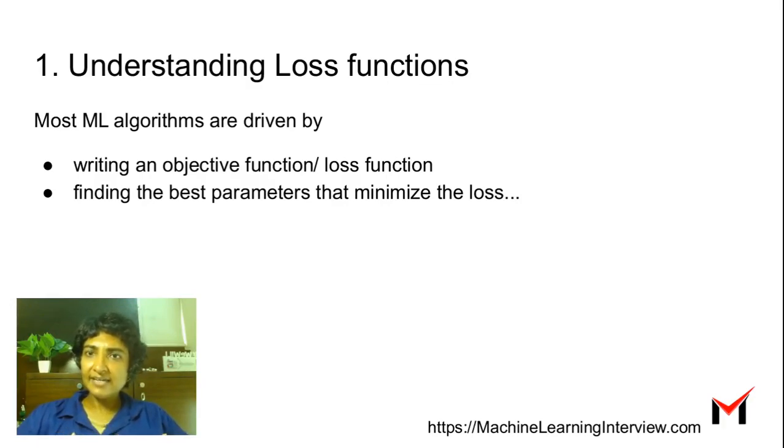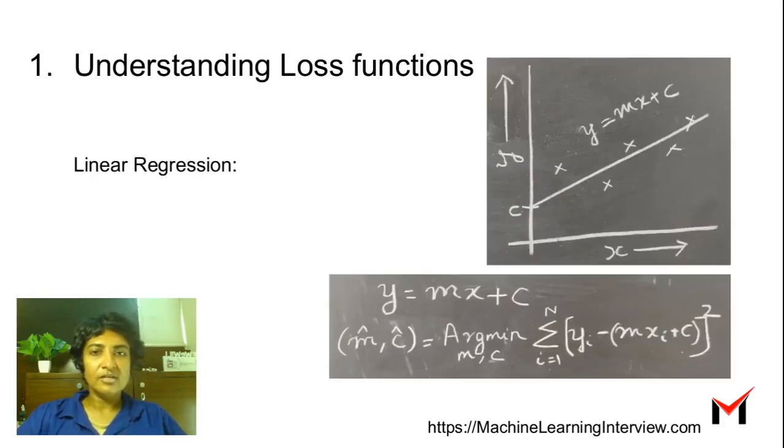In machine learning, for most algorithms, we first write a loss function or objective function. Building the model involves finding the best parameters that minimize that loss function.